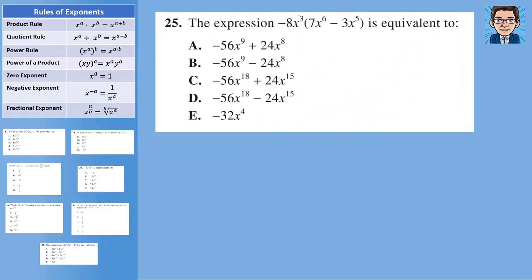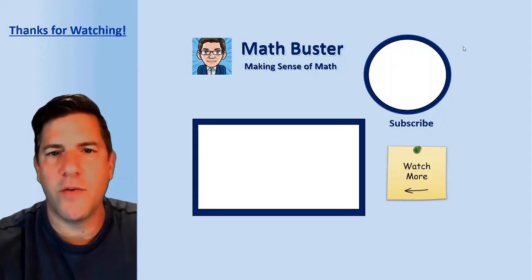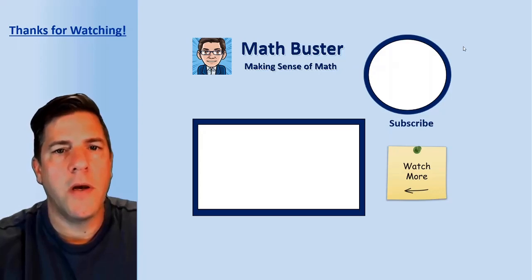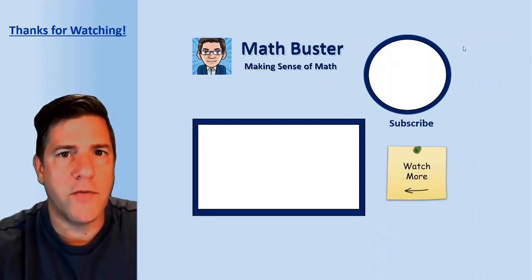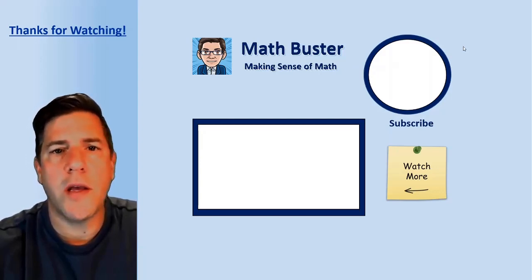The last problem involves distribution using rules of exponents. For the first term, negative eight times seven gives negative 56 as regular multiplication, and adding exponents gives x to the ninth. For the second term, negative eight times negative three is positive 24, and x to the third times x to the fifth gives x to the eighth. Looking at the answers, that matches choice A. If you have an ACT test coming up, good luck. Please comment below on things you liked or ways I can improve. Thanks for watching — come back again soon.